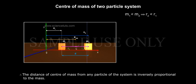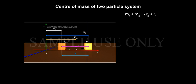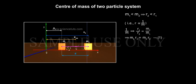Therefore, the distance of centre of mass from any particle of the system is inversely proportional to its mass. That is, R is directly proportional to 1 by M. That implies R1 by R2 equals M2 by M1, which implies M1 R1 equals M2 R2, equation 1.